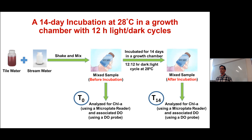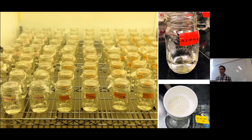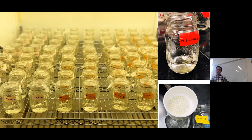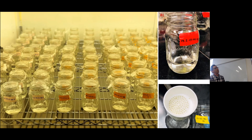We worked with Michael Thompson, Matt Helmers, Grace Wilkinson — now at University of Wisconsin — to set up this experiment. We collected water from the COBS long-term biofuel cropping system experiment — specifically from the corn-soybean rotation, the corn-soybean with cereal rye cover crop, and the restored prairie.